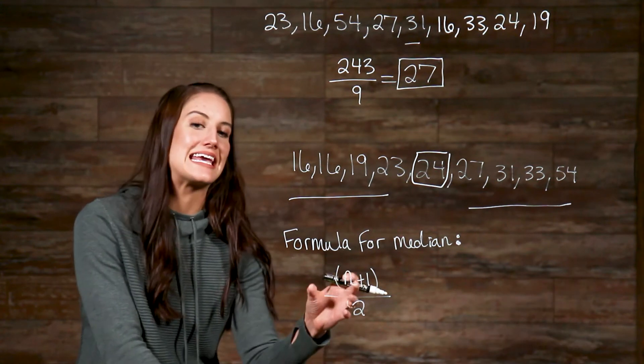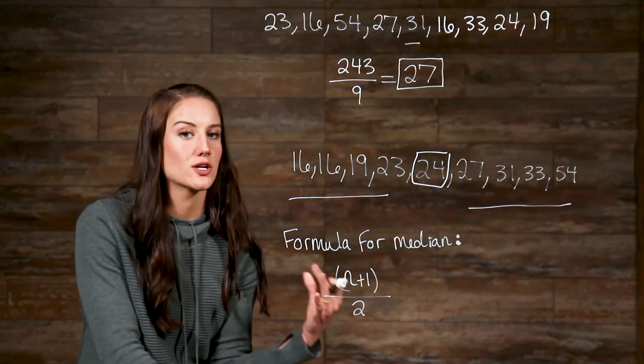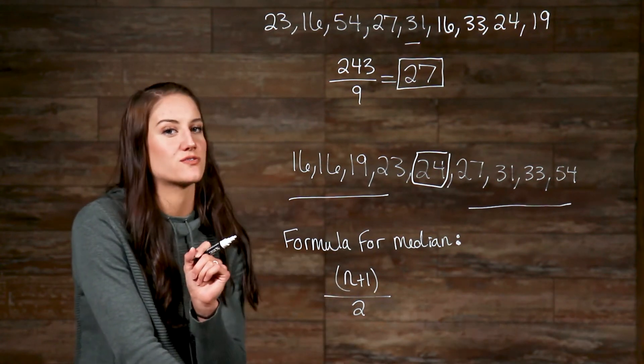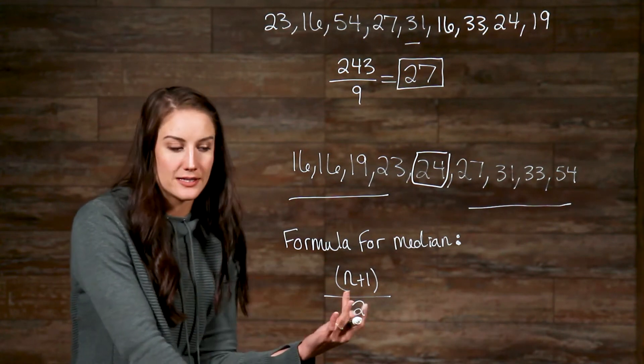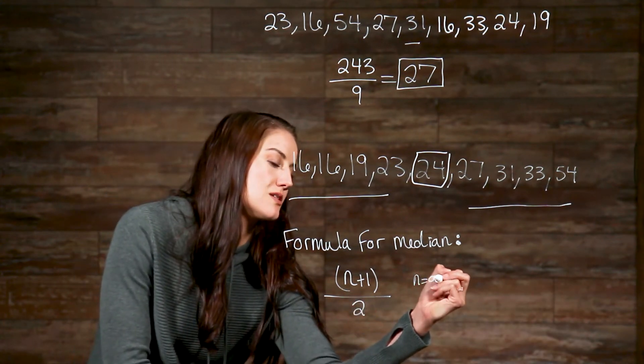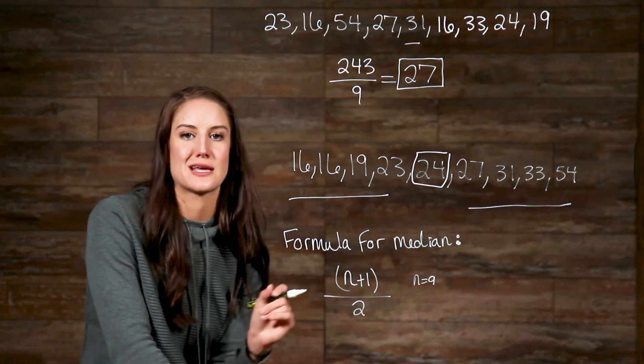Now, in this formula, n is the amount of numbers on our list. Now, let's see if this works for us. Our n is equal to nine, so I'll just write that out because we have nine numbers on our list, and we'll just use the same list.